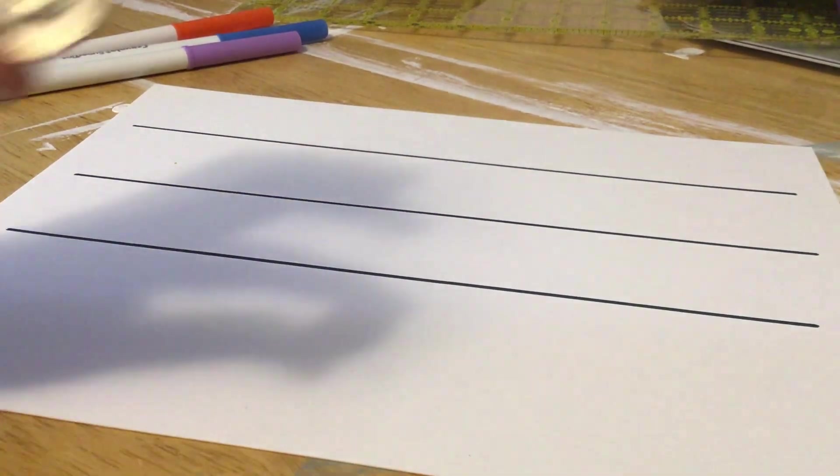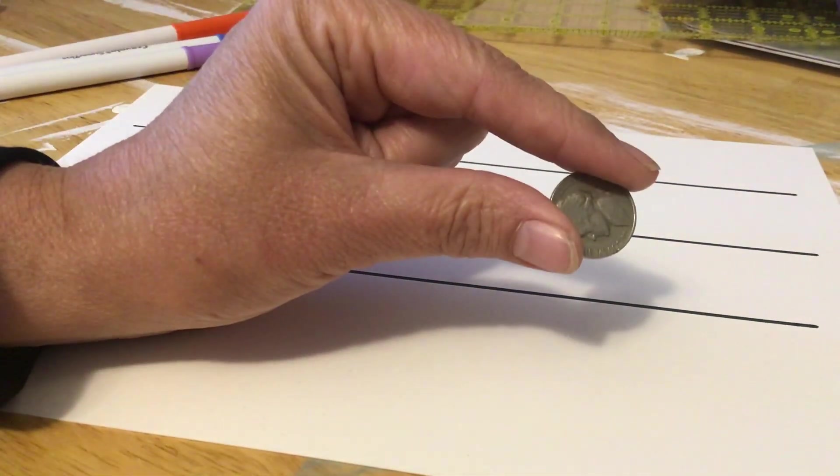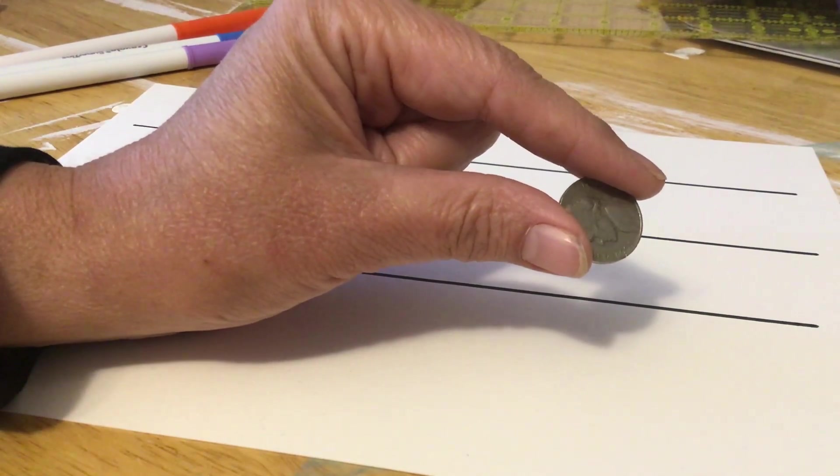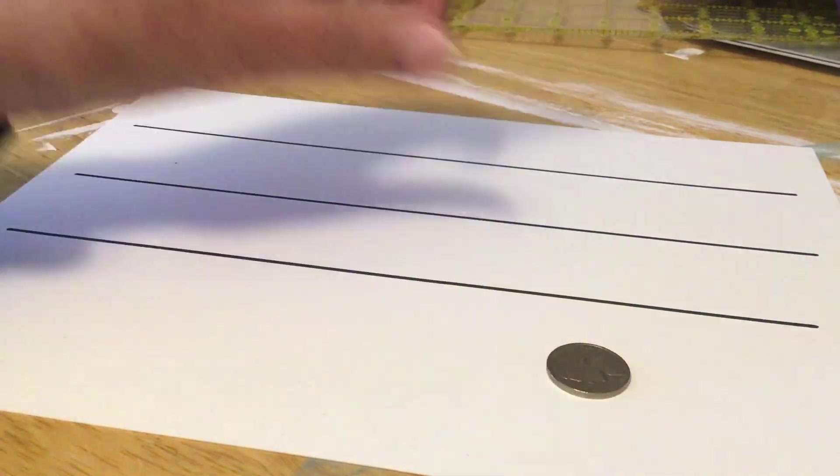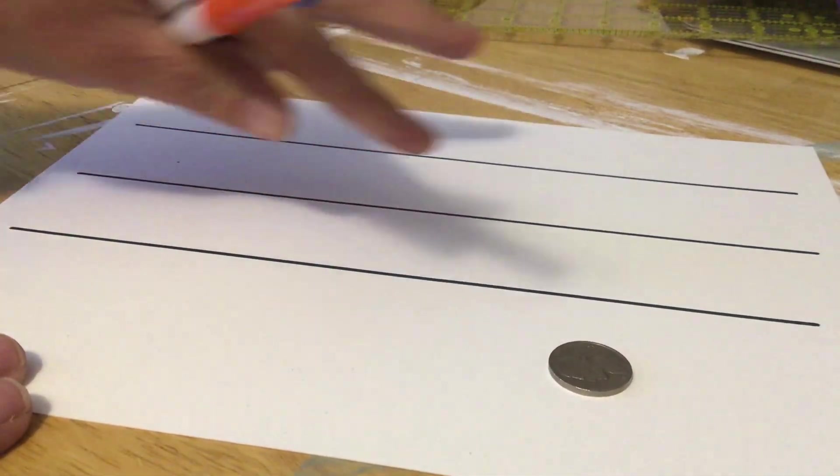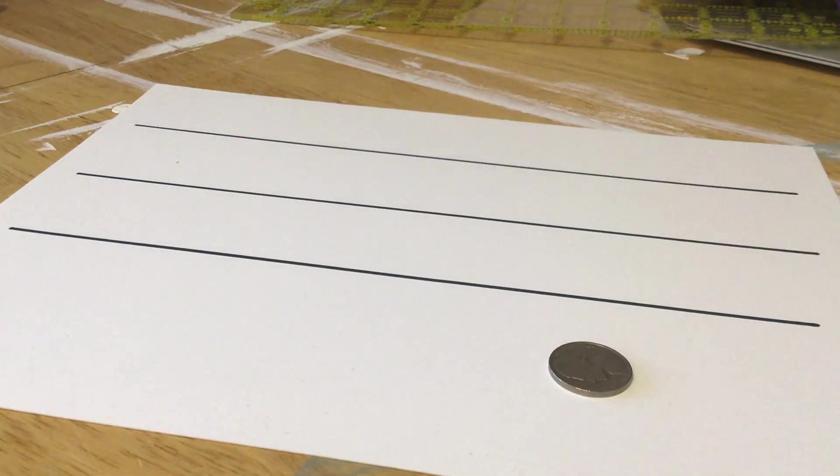And today, instead of a quarter, we're going to use a nickel. So if you would go get a nickel, your paper, your markers, and draw three lines on your staff, that would be fantastic. So you can push pause now and come back when you have those things.